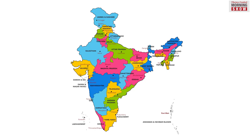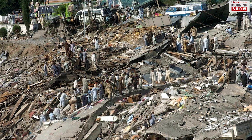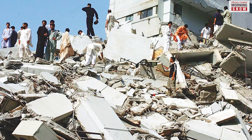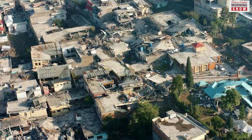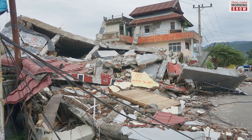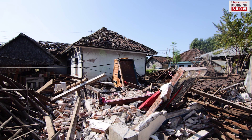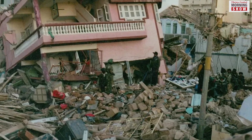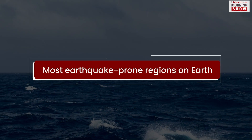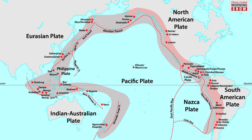The Himalayas are among the most earthquake-prone regions in the world, including parts of Jammu and Kashmir, Himachal Pradesh, Uttarakhand, northeast India, and north Bihar. Kashmir's earthquake in 2005, which killed 80,000 people, resulted from one such seismic movement. Gujarat's Kutch region, hit by a 7.7 magnitude earthquake in 2001, is also earthquake-prone — over 16,000 people lost their lives in that event.